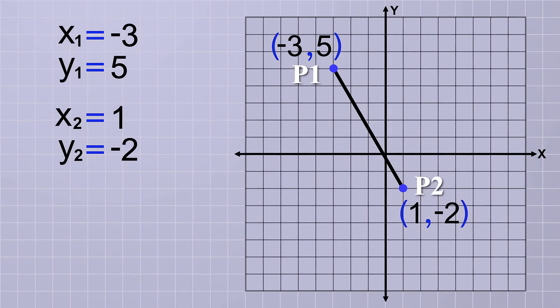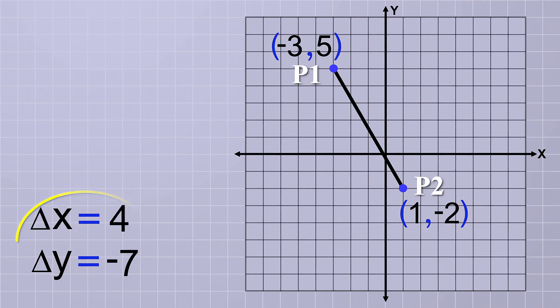First, we plug those coordinate values into the delta equations. Delta x equals x2 minus x1, which is 1 minus negative 3, so delta x equals 4. Delta y equals y2 minus y1, which is negative 2 minus 5. So delta y equals negative 7. Again, we see that those delta values agree with the graph and the right triangle formed by the line between the two points.